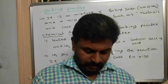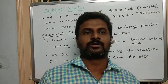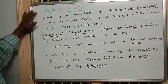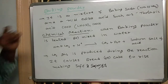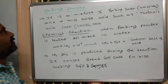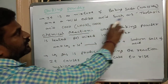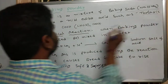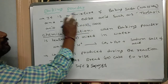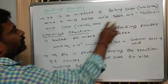Good morning students. Today's topic is why cakes are soft and spongy — the reason is due to baking powder. Baking powder is a mixture of baking soda (NaHCO₃) and a mild edible acid such as tartaric acid.